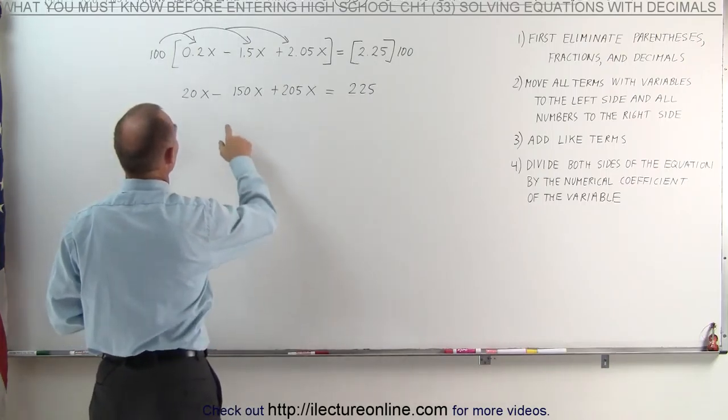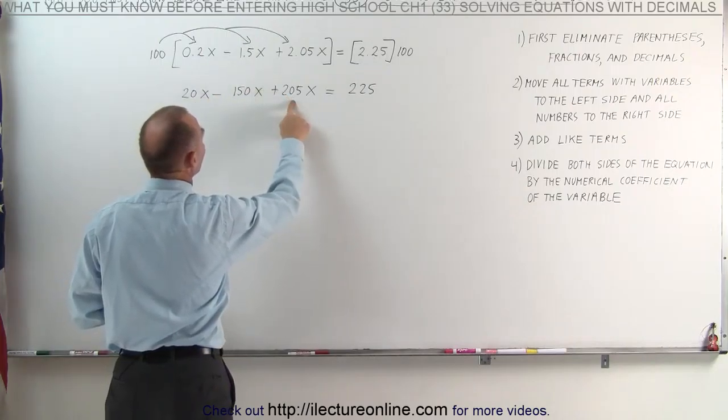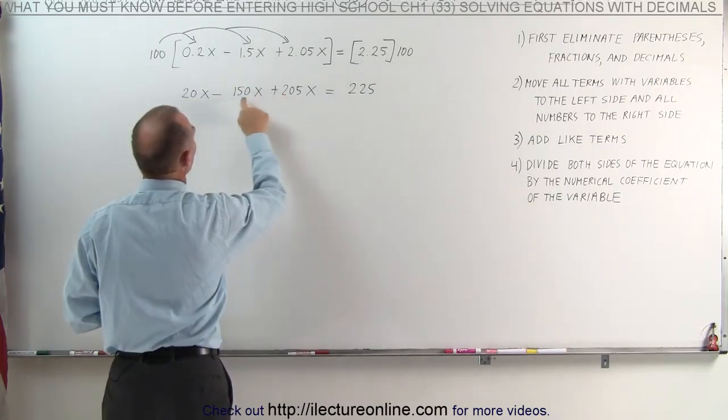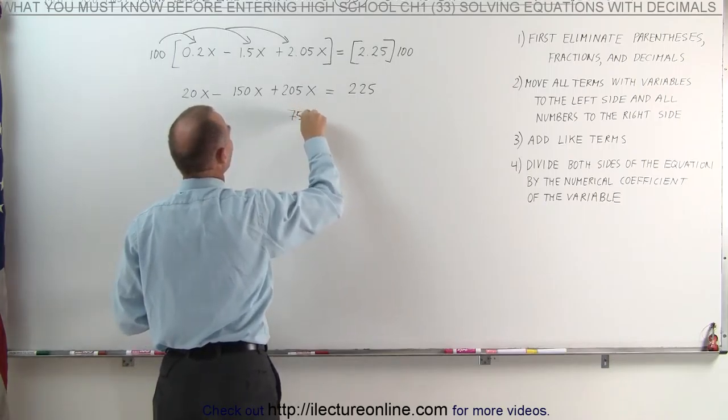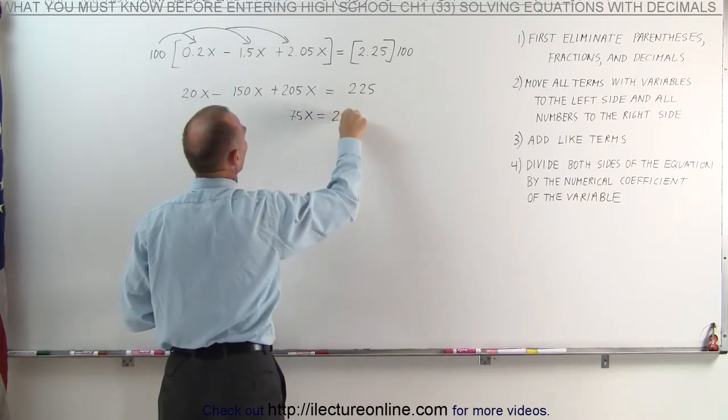And that we have to do. Here we have 20x plus 205x, which is 225, minus 150x, which gives us 75x is equal to 225.